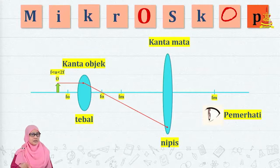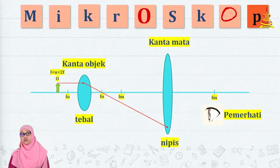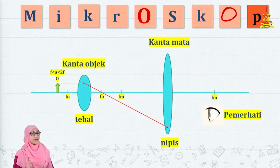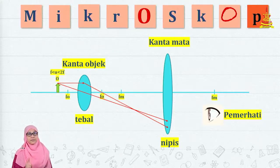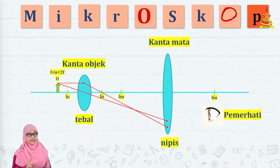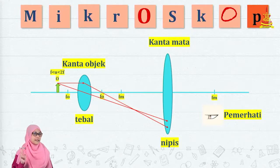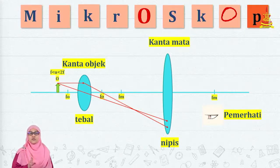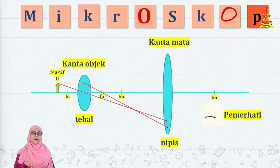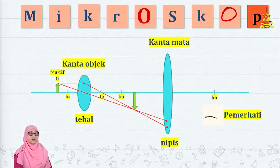Adakah ada sebarang intersections? Belum lagi. Kita lukis gambar rajah sinar yang kedua — daripada titik yang sama, lalu dekat centre. Setelah melukis dua gambar rajah sinar, terdapat intersections. Bila kamu jumpa intersections atau persilangan, kamu boleh berhenti kerana di situlah imej akan terbentuk. Imej terbentuk di intersections tersebut.